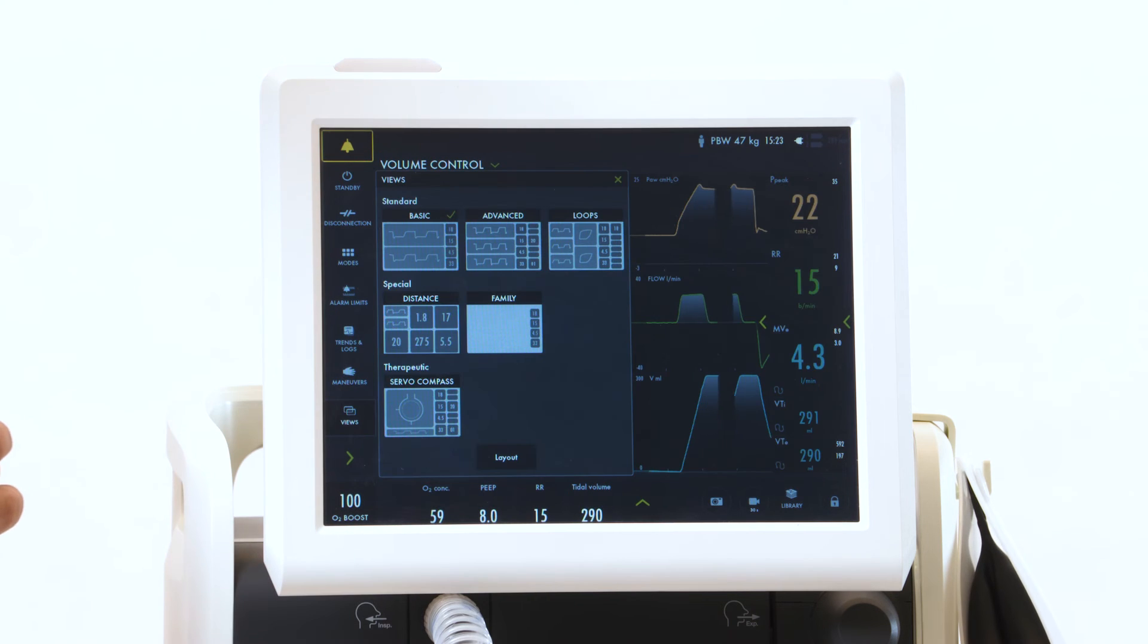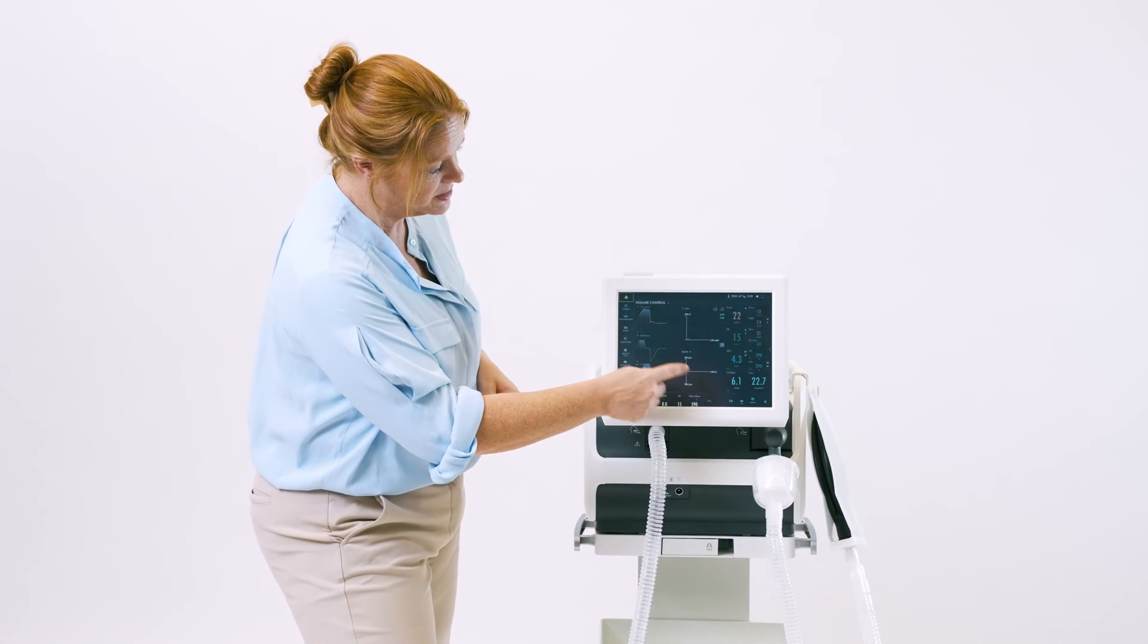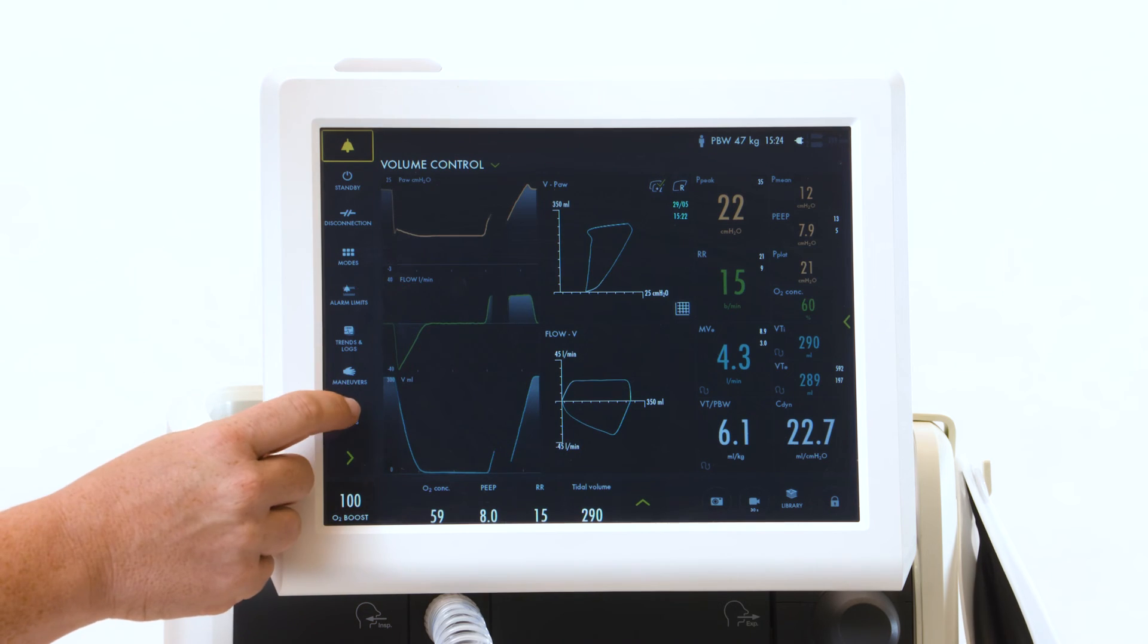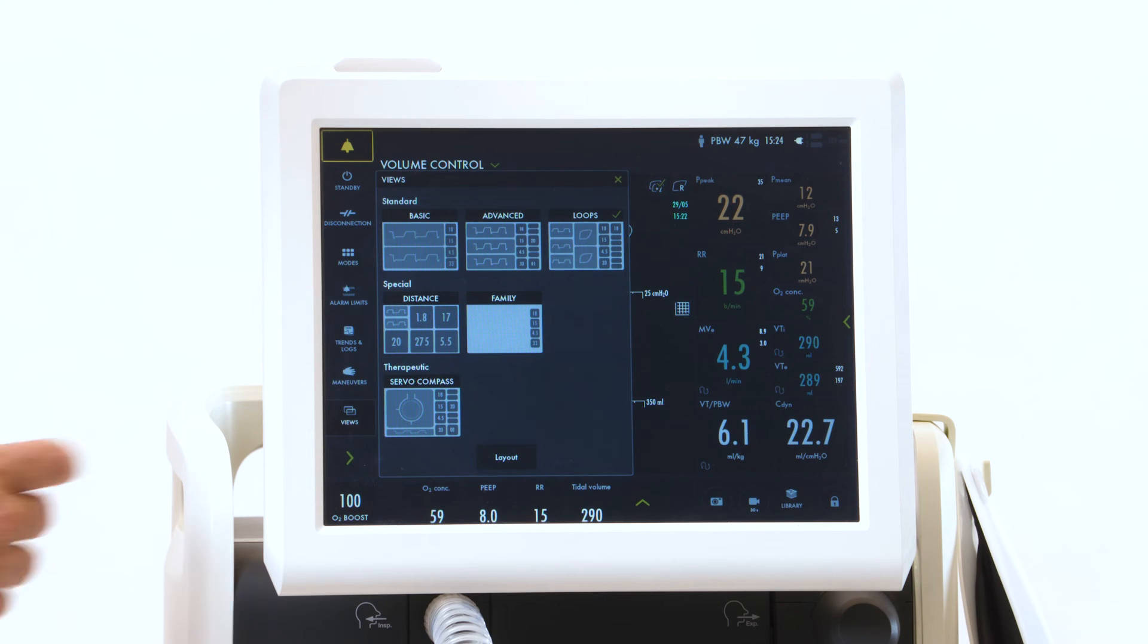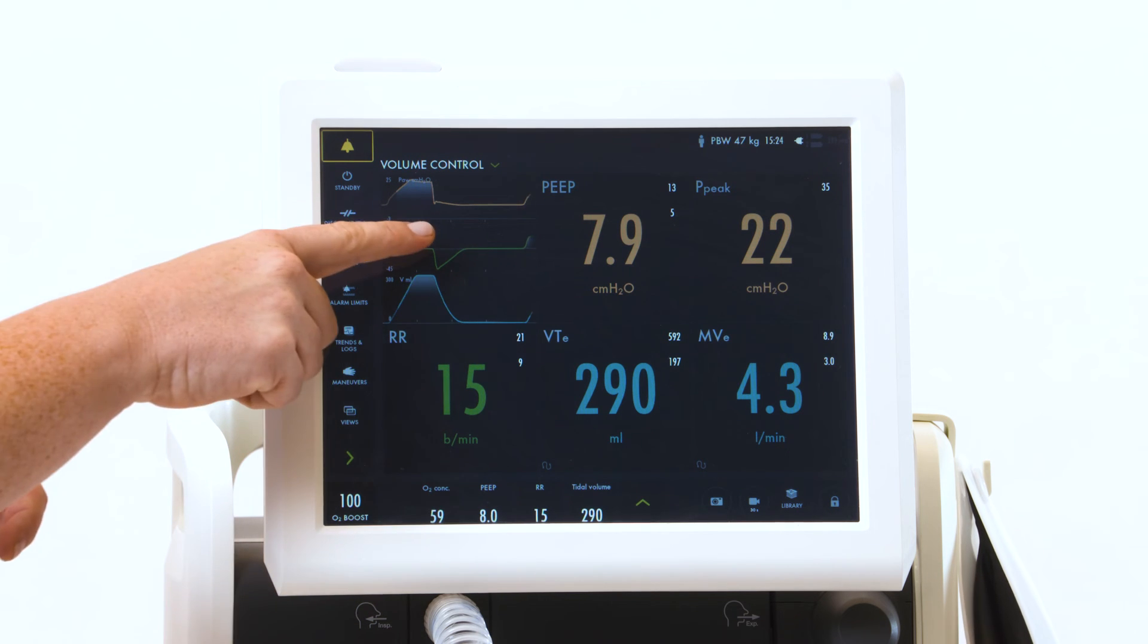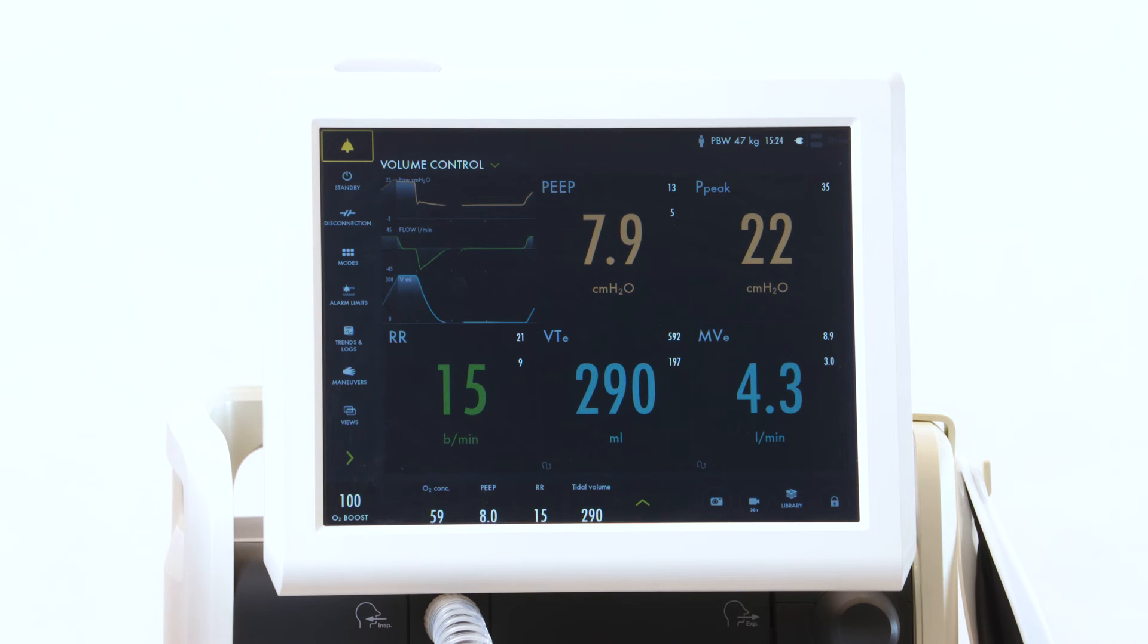Looking again at your views, you have a loop screen. Your loop screen will show your loops, which you can also have reference loops. Note it up here. Just touch to activate. When you look at your views again, there's a distance view. It will show you five basic measured values, as well as your pressure and flow waveforms.